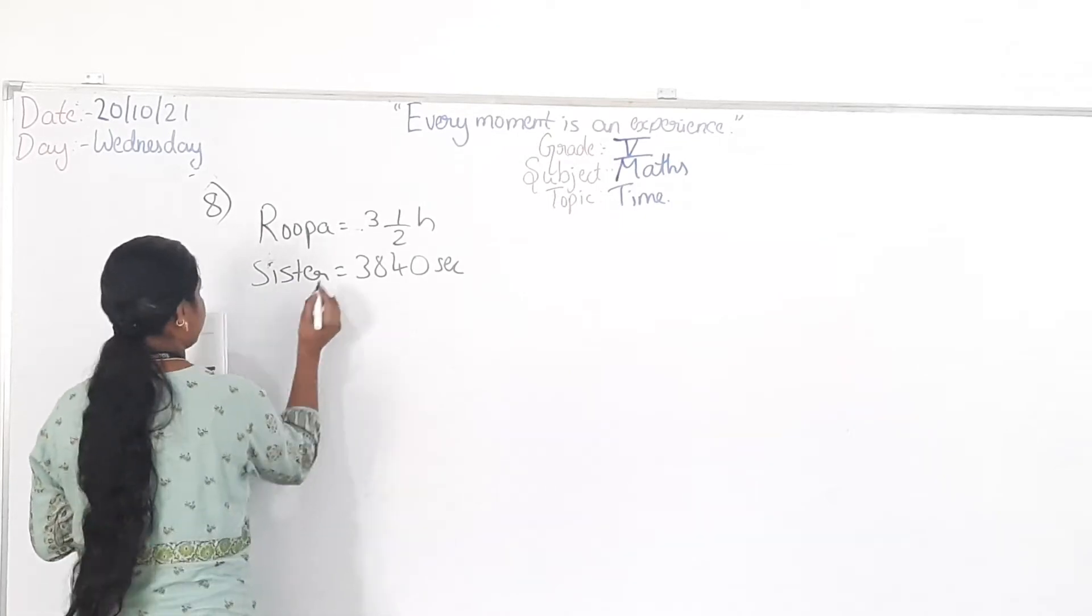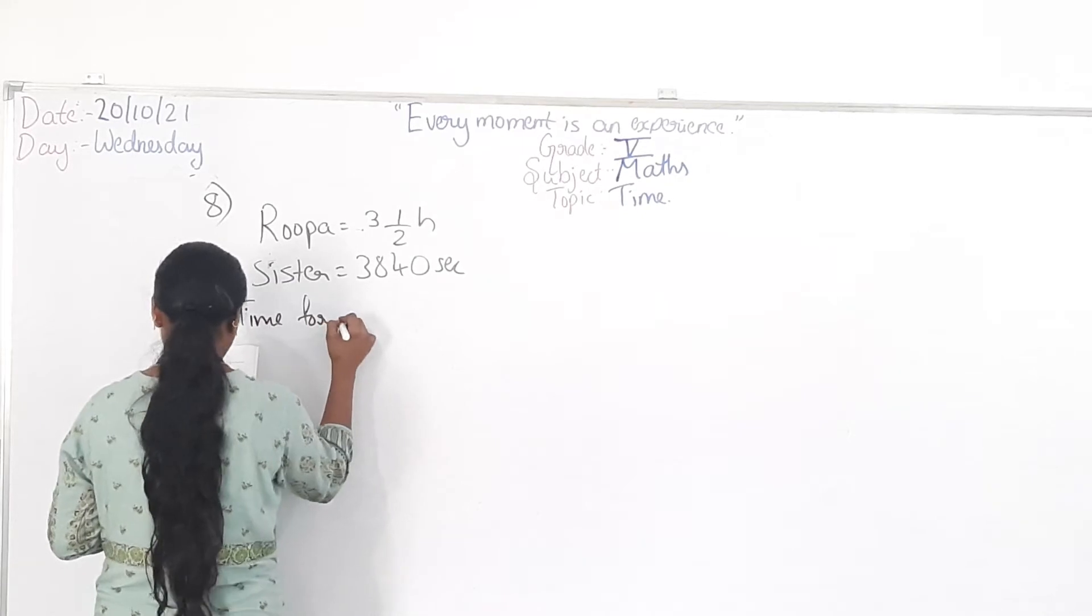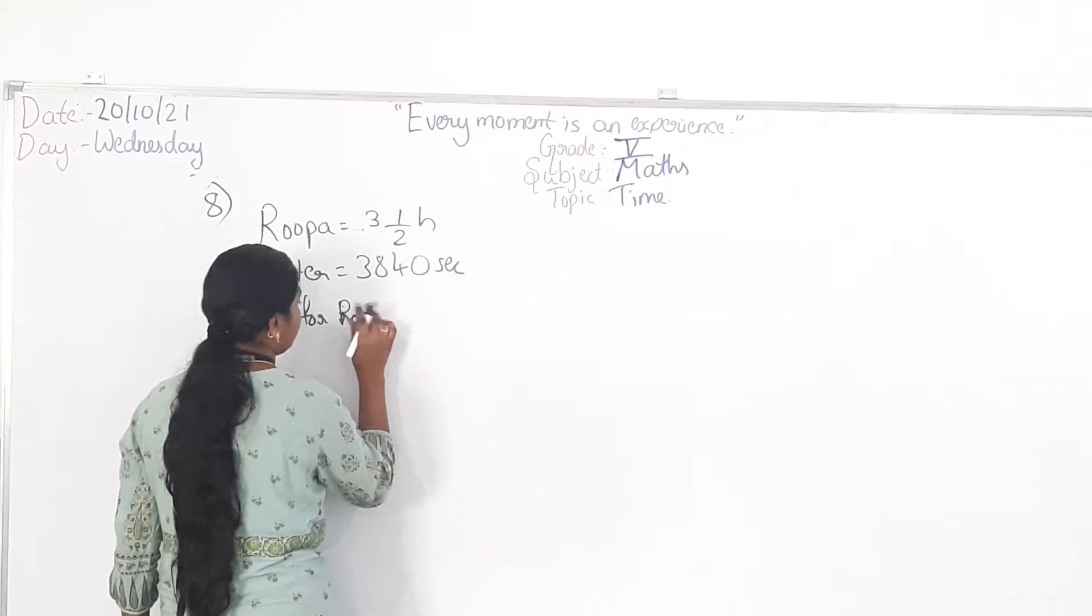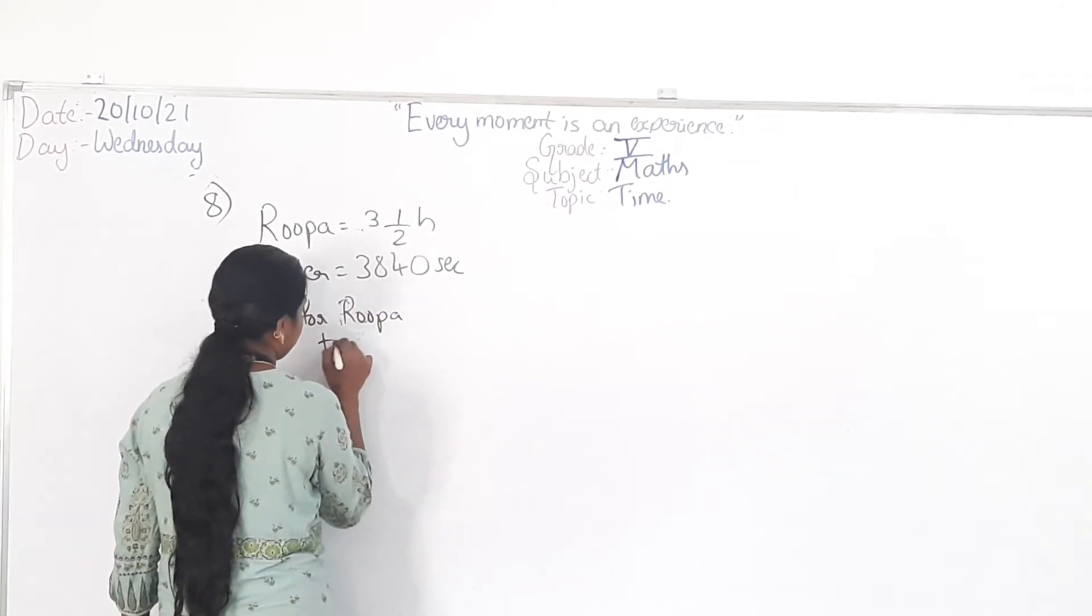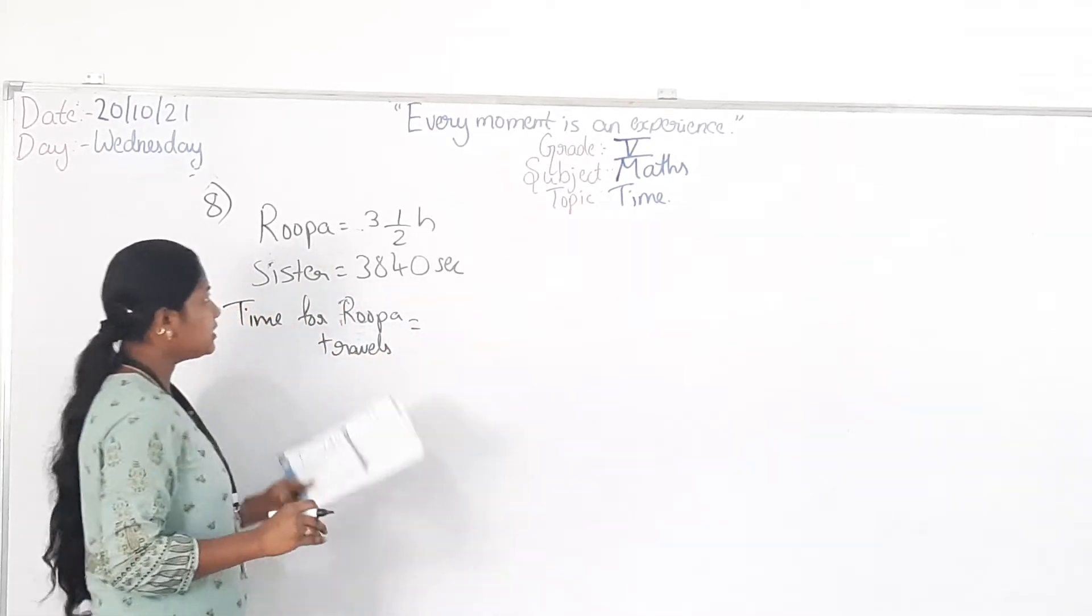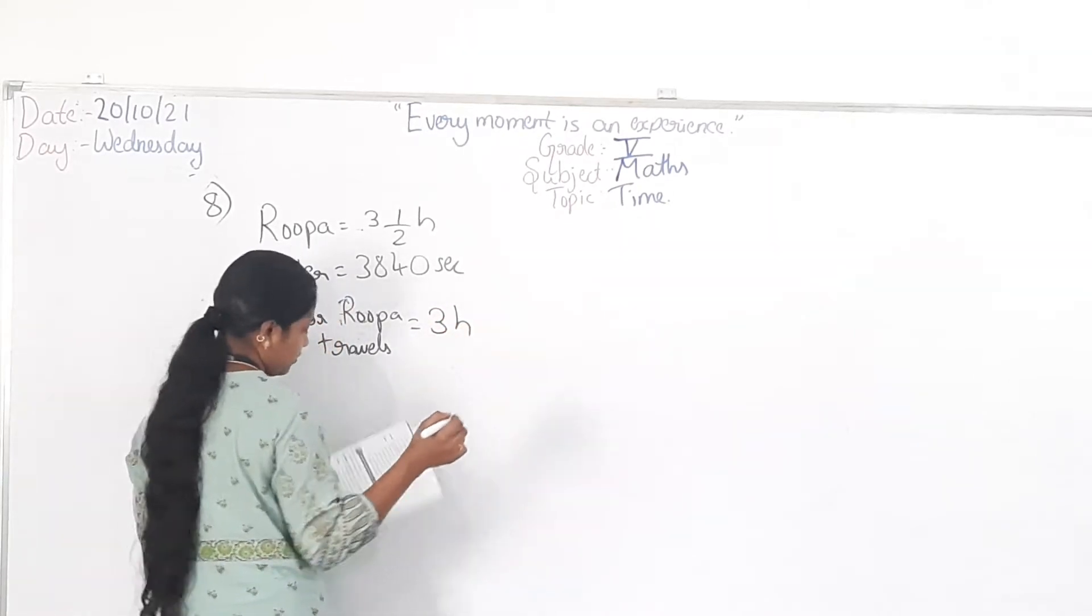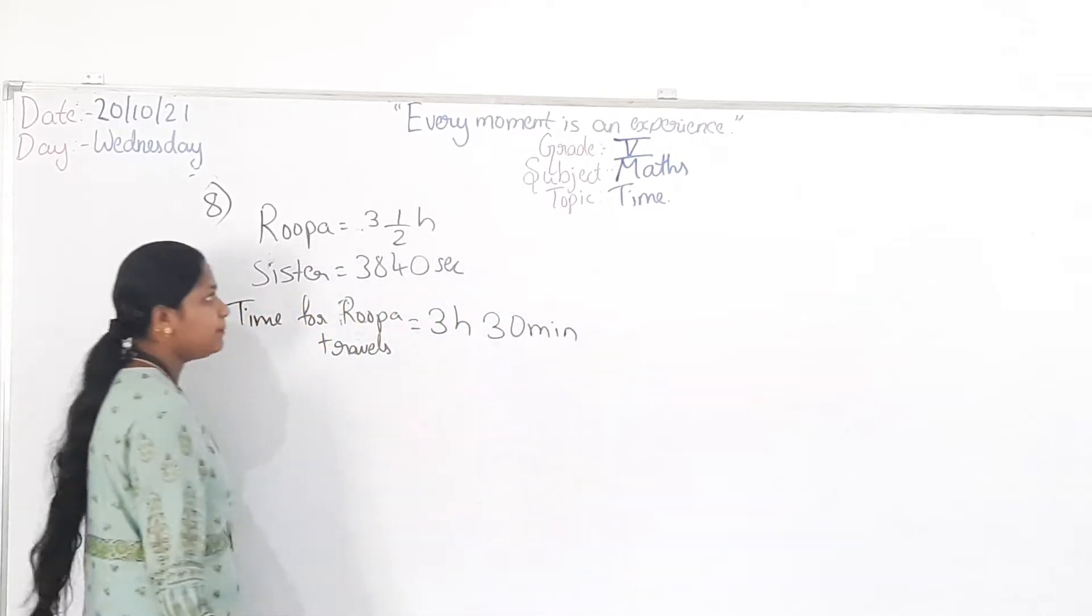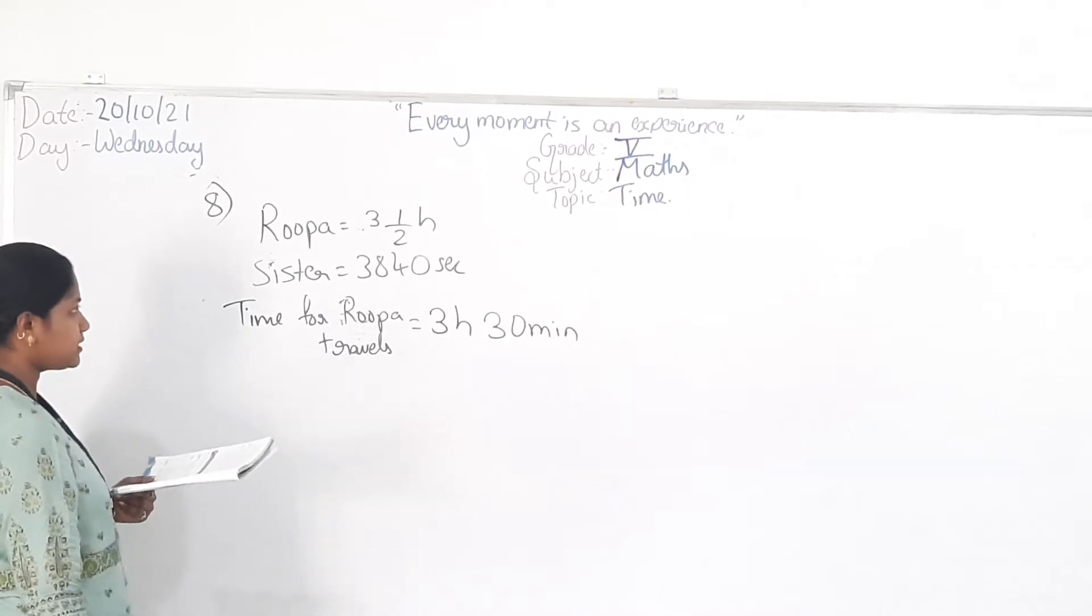First see this. Time for Rupa travels. So you have to convert this half into minutes. So you will get 3 and a half equals 30 minutes. So you will be having the formula. Then what about this? This is 3840 seconds.